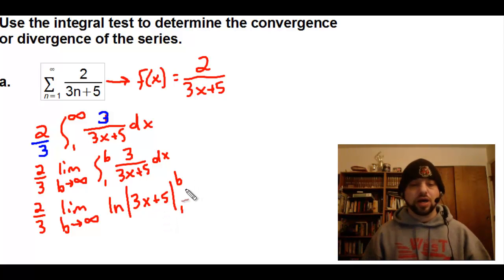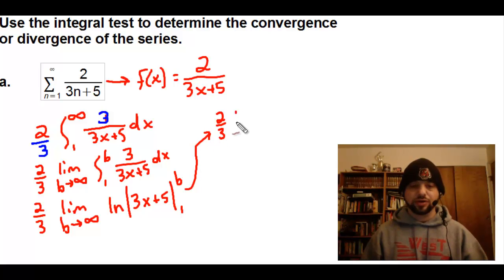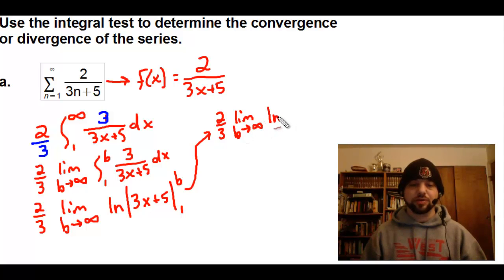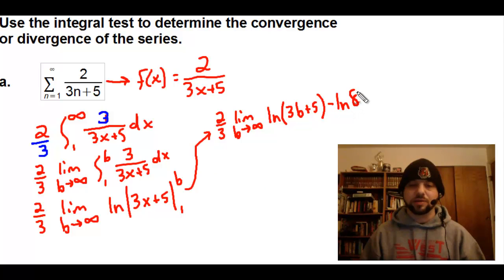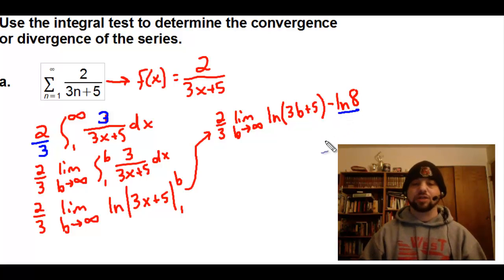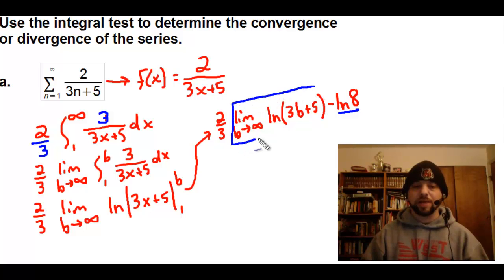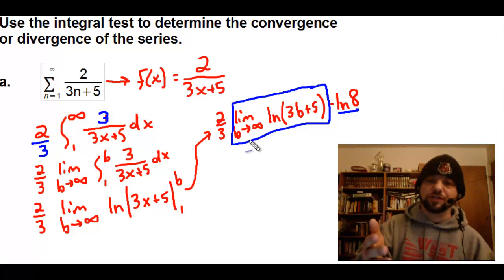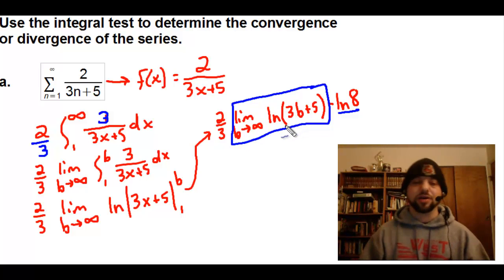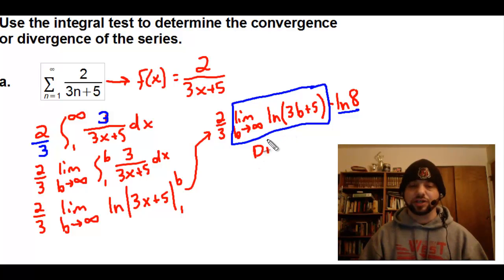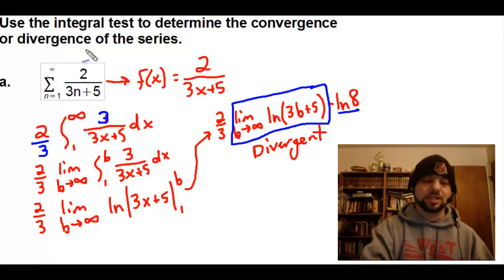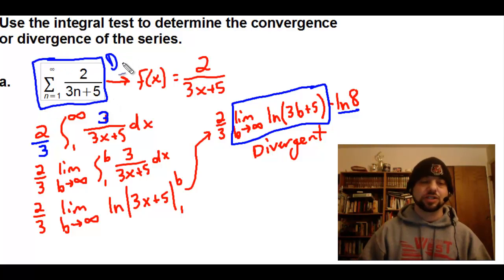Moving forward, what we have is 2 thirds times the limit as b approaches infinity of the natural log of 3b plus 5 minus the natural log of 8. The natural log of 8 is just a constant, no problem. But what is the limit as b approaches infinity of this natural log? That would be divergent. And because this integral diverges, I can go back and say that my original series diverges as well.